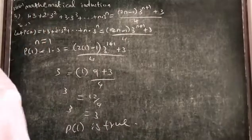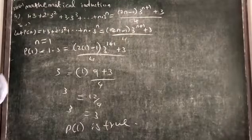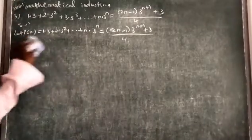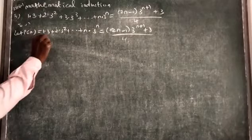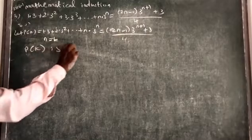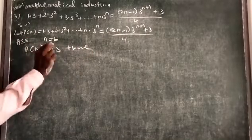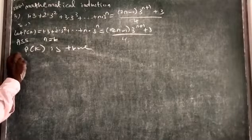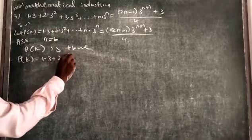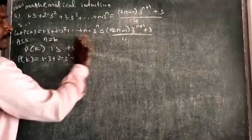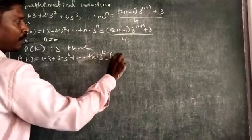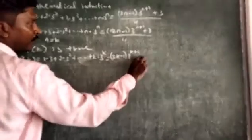Next, we assume n equal to k, and we assume that P of k is true. With P of k true, we can write: 1 dot 3 plus 2 dot 3 squared plus ... plus k into 3 to the power k equals 2k minus 1 times 3 to the power k plus 1, plus 3 by 4.